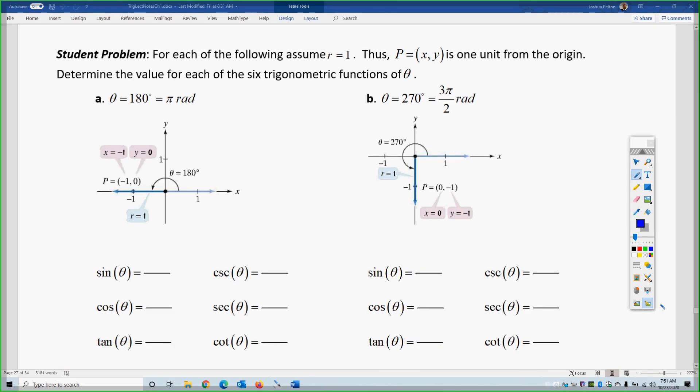For the student problems, we're going to do 180 degrees. So, sine is defined as y over r, cosine is defined as x over r, and then y over x is the tangent. So, if I reciprocate, 1 over 0, 1 over negative 1, negative 1 over 0.